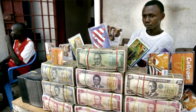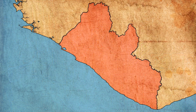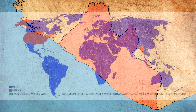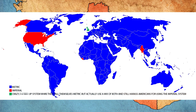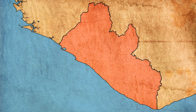Its money became known as the Liberian dollar, and to this day they are still one of the few countries who also use the imperial system of measurement rather than the metric. It's clearly an American colony.